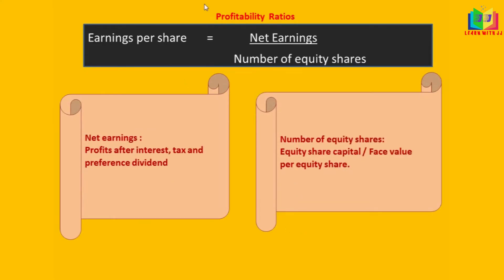The next ratio is earning per share under profitability ratios. The formula is net earnings divided by number of equity shares. This net earnings is nothing but profit after interest, tax, and preference dividends — the profit available for the equity shareholders. Number of equity shares is equity share capital divided by face value per equity share — using this formula you can find the number of equity shares.